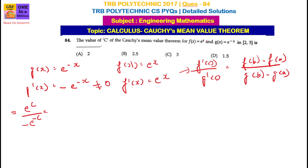The function is e power x. We substitute x with the interval values: a equals 2 and b equals 3. Now we differentiate and set up the Cauchy's Mean Value Theorem formula.